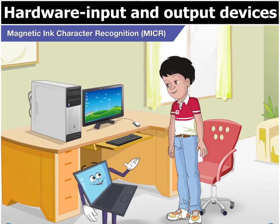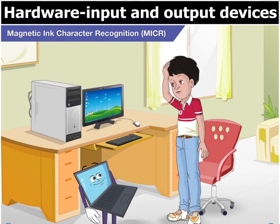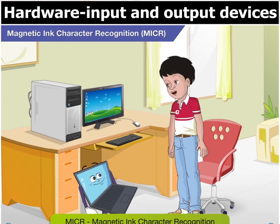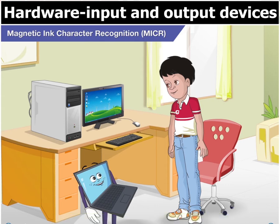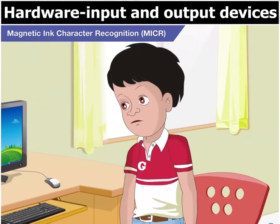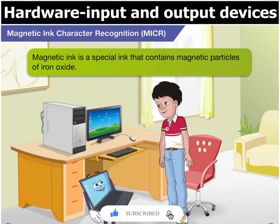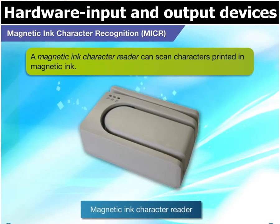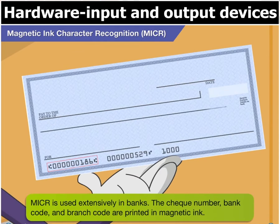Goggle, do you know what MICR is? I have read that it stands for Magnetic Ink Character Recognition. That's right. And what is Magnetic Ink? Magnetic Ink is a special ink that contains magnetic particles of iron oxide. A Magnetic Ink Character Reader is a type of input device that can scan characters printed in magnetic ink. MICR is used extensively in banks. The check number, bank code and branch code are printed in magnetic ink.